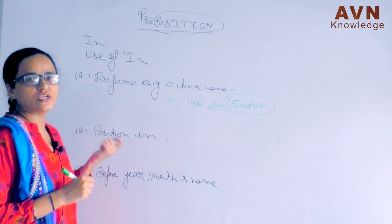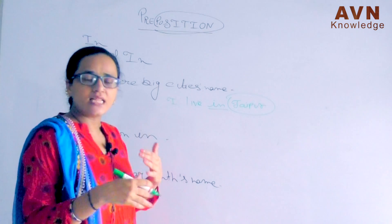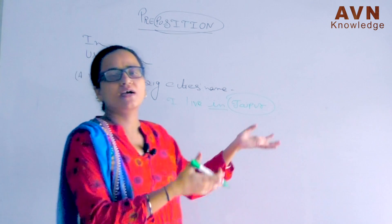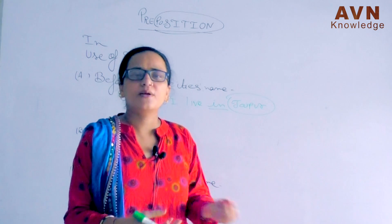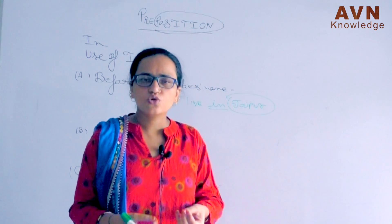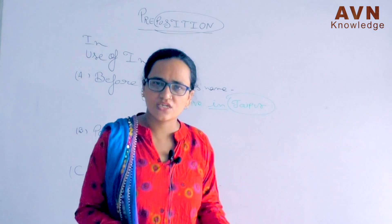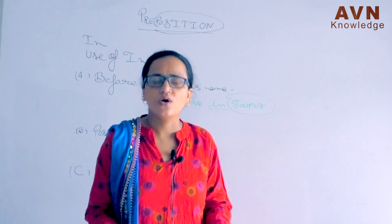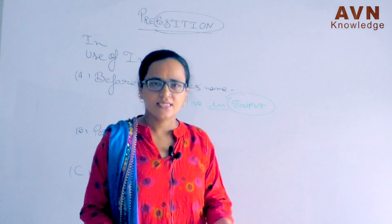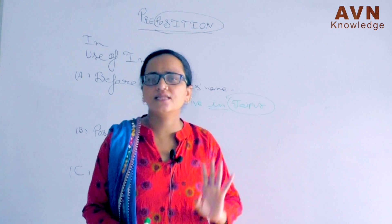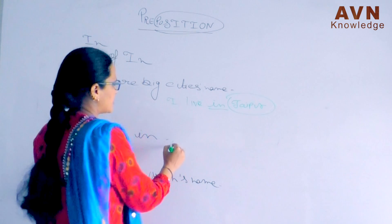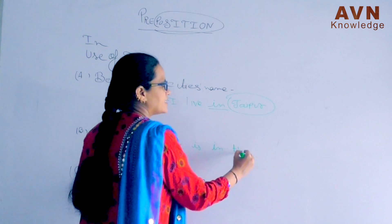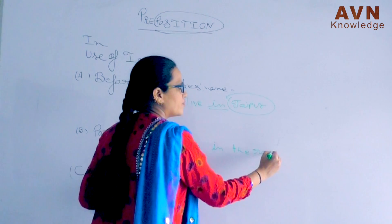Second use of 'in': when you want to go inside somewhere and you are given permission — 'May I come in?' — that situation uses 'in'. Or if something is inside a place, like 'He is in the room' — he is in the room and he has no movement. So whenever you have an enclosed position, you will use 'in'.